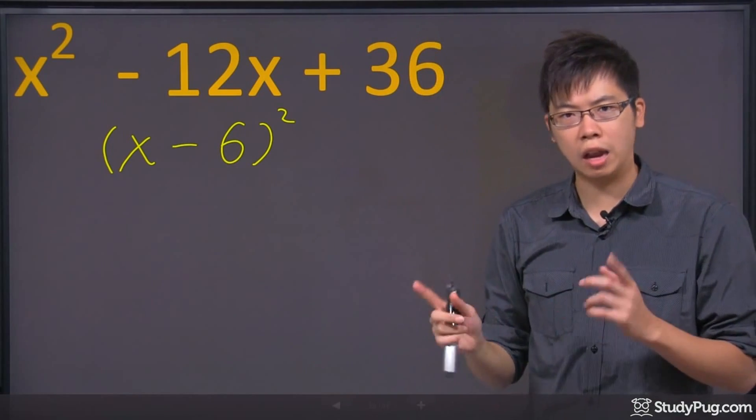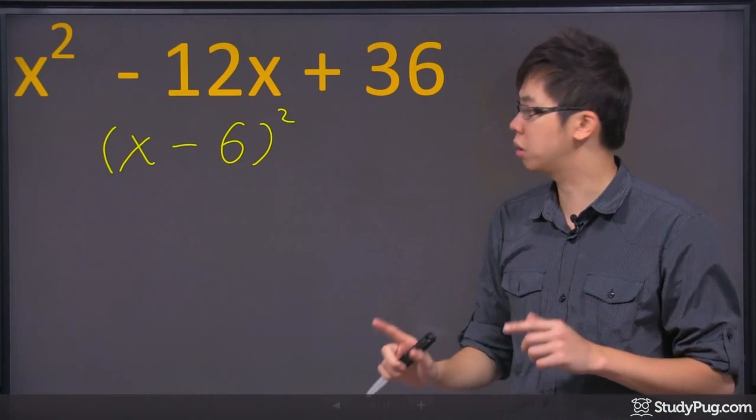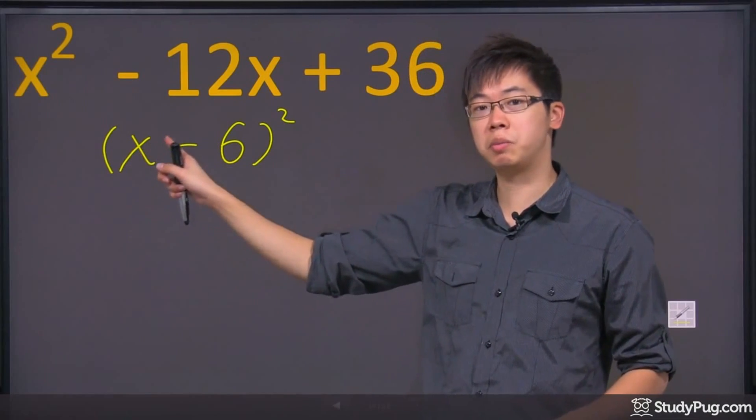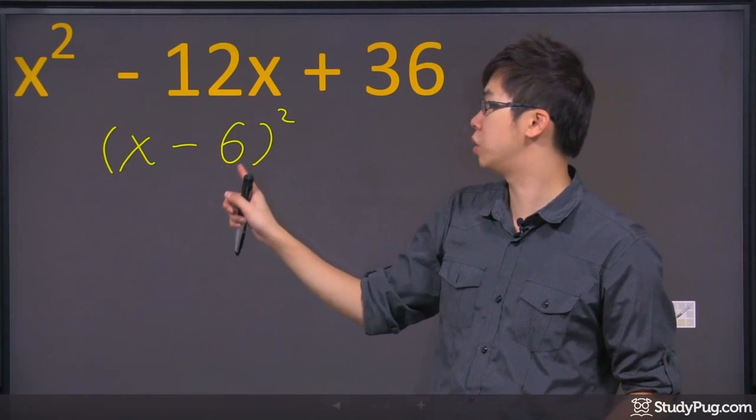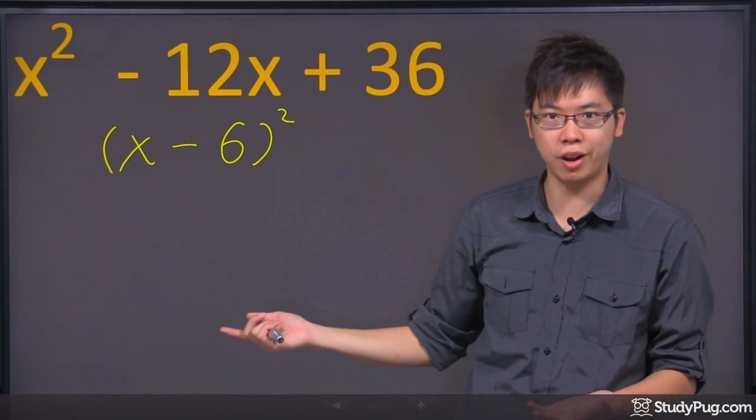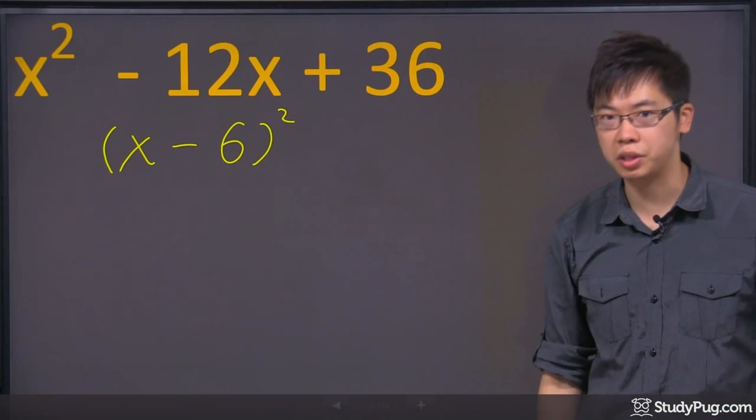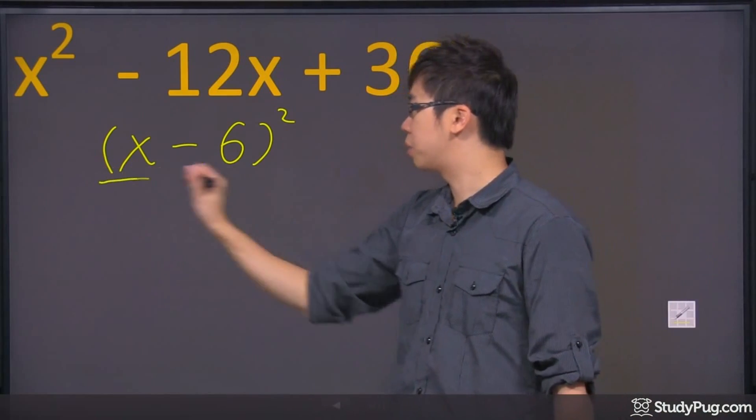Now you just have to check. How do you check? You're going to do the math in your head really quickly. So x square is an x square. x times negative six times two is negative 12x, which is correct. Then this negative six square is still positive 36. So this is what they're looking for.